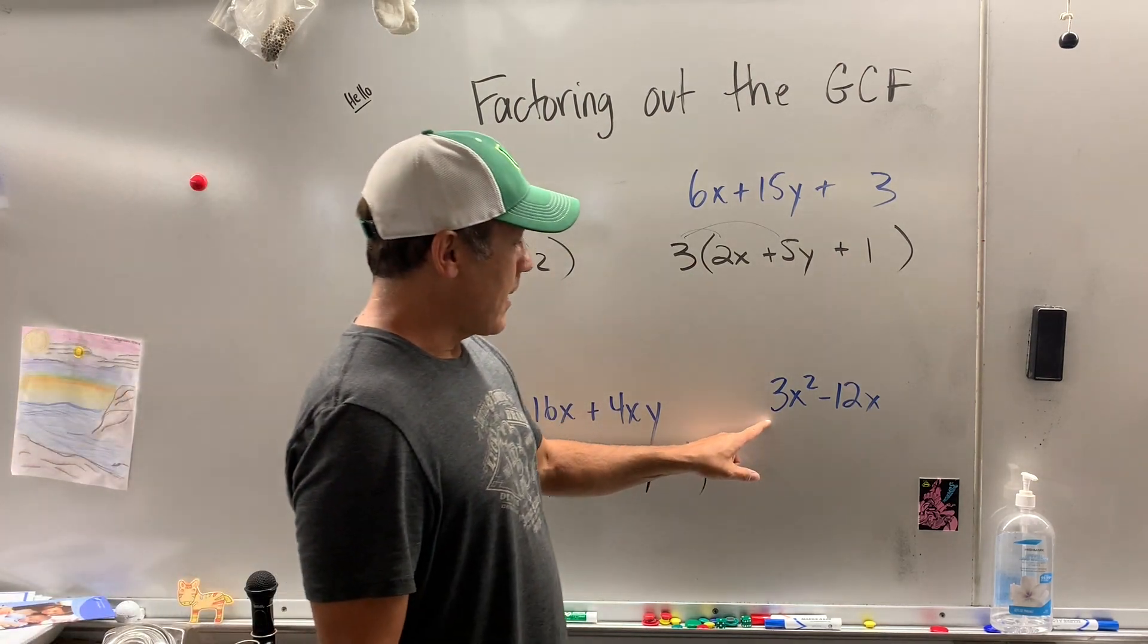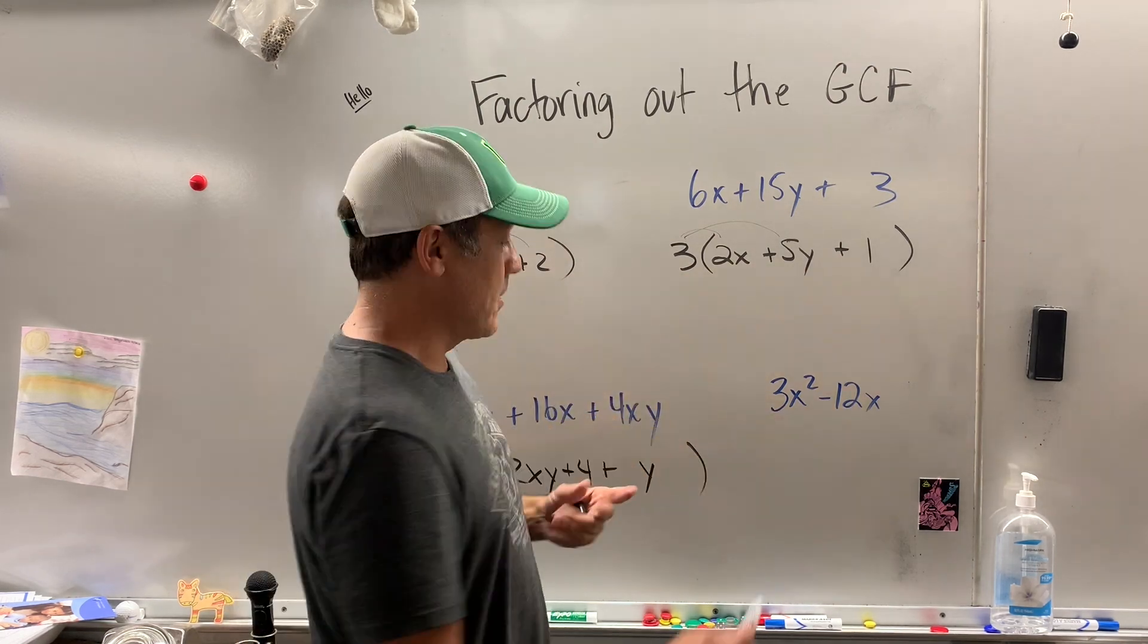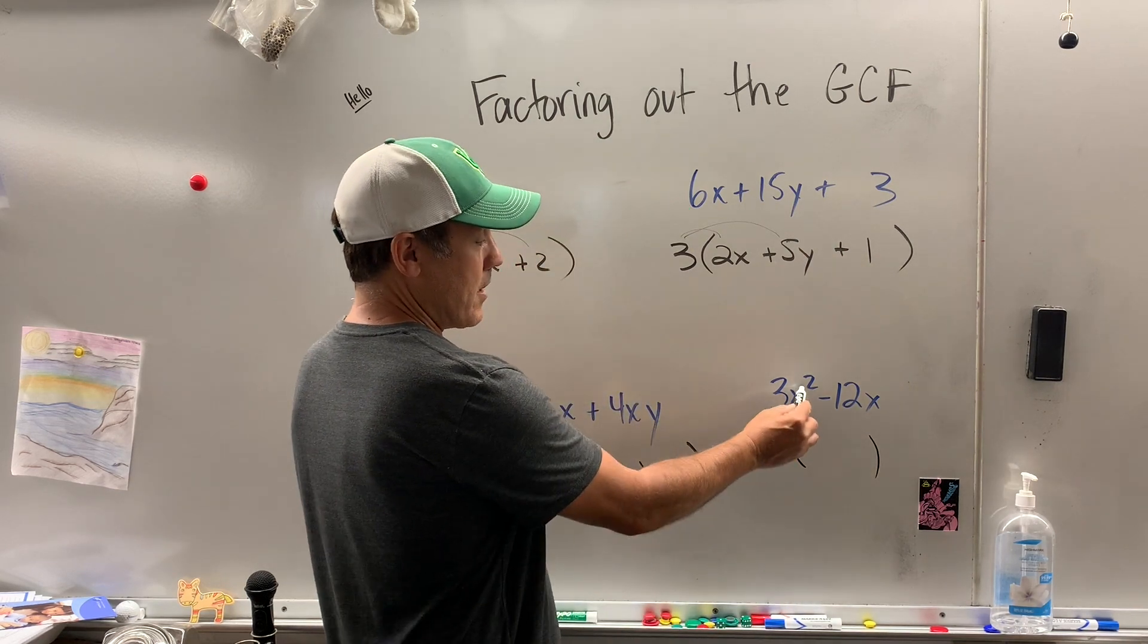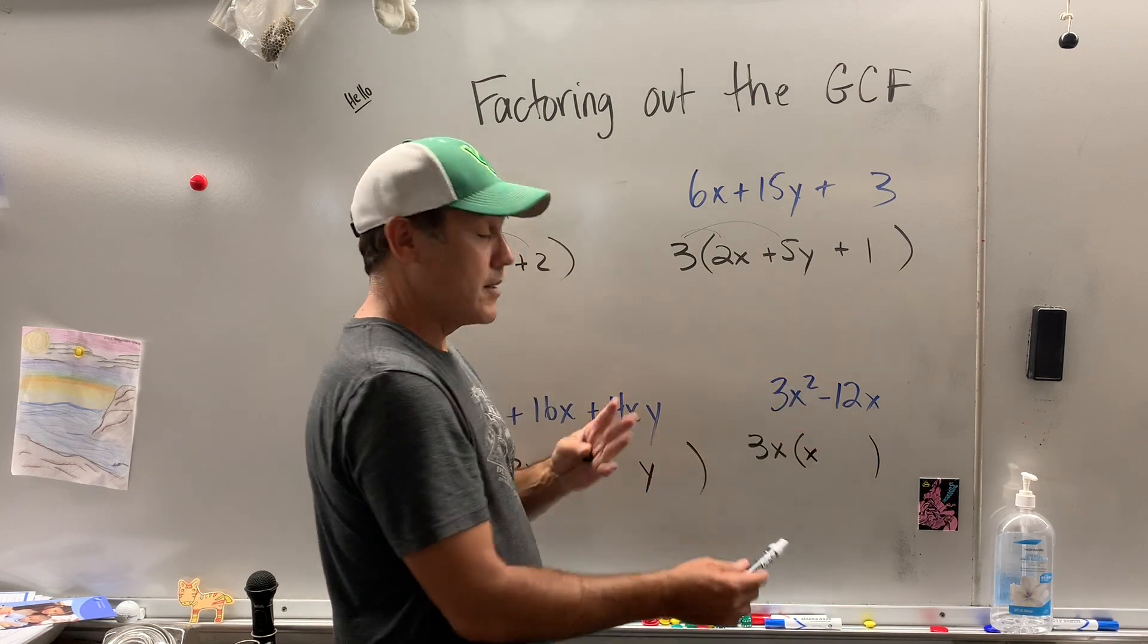Last one. Okay, both terms have a 3, and both terms have an x, so that means I could pull out 3x. Now, 3x times what? I'm missing an x. Let's make sure. 3x times x. Yep, x times x, x squared. Got it.